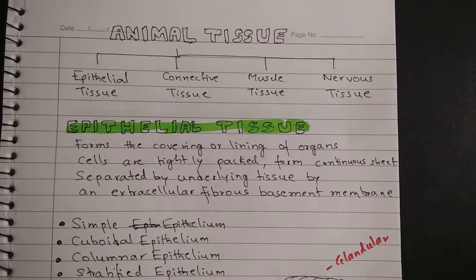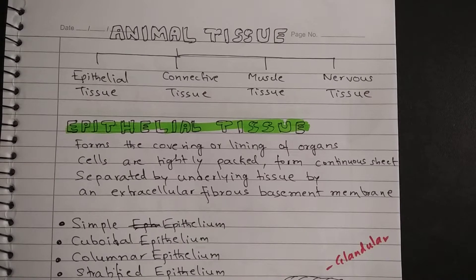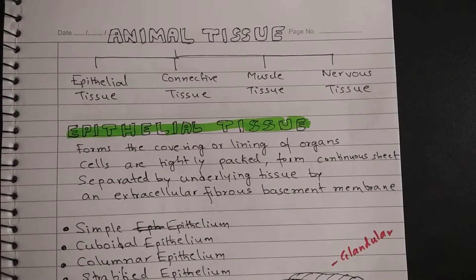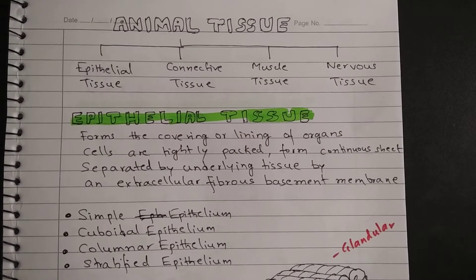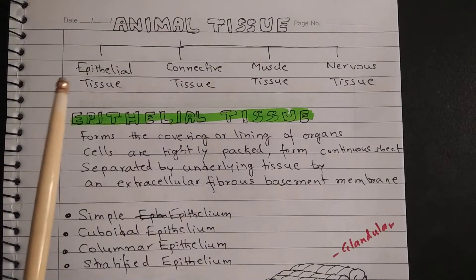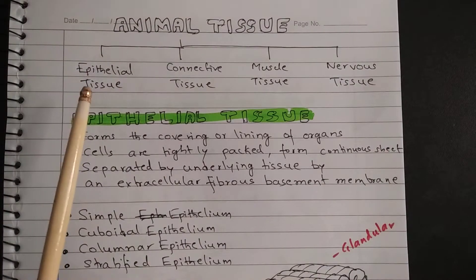Hi, this is Ajay Anand and welcome to science classes from excelup.com. In this lesson you will learn about animal tissues. This lesson has been taken from the chapter 'Tissue' from Class 9th science. In a previous video I talked about plant tissues, and now this is all about animal tissue. Animal tissues are of four types.